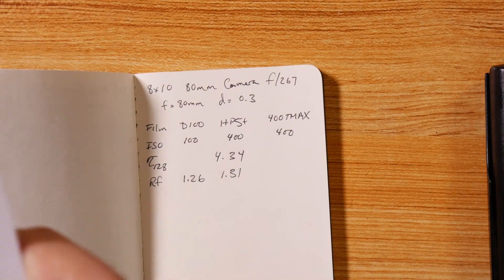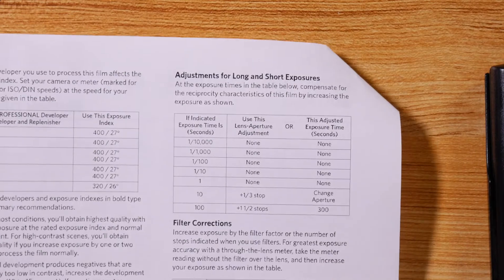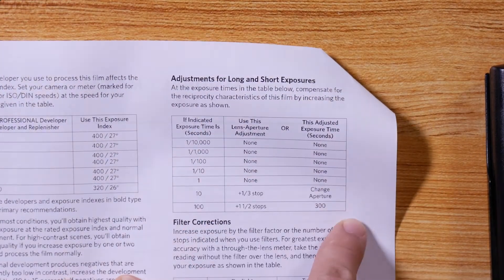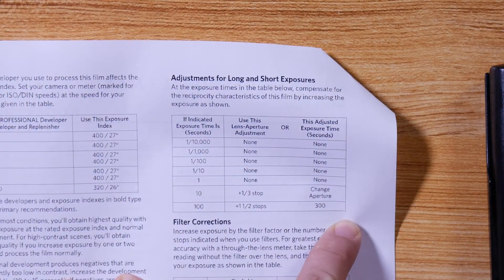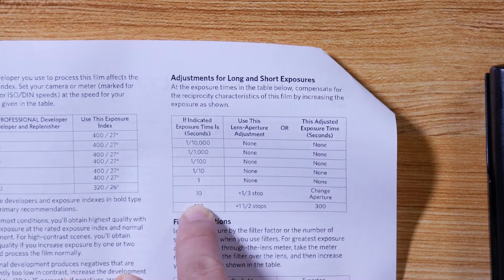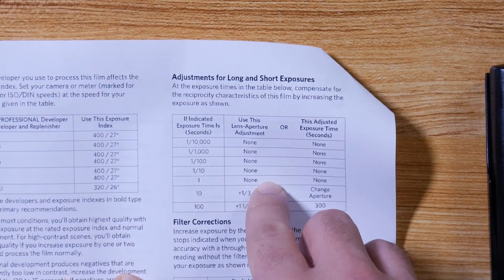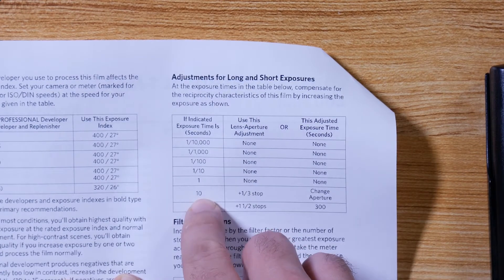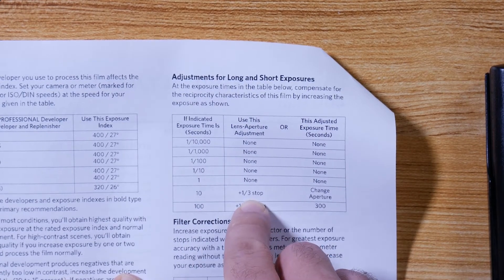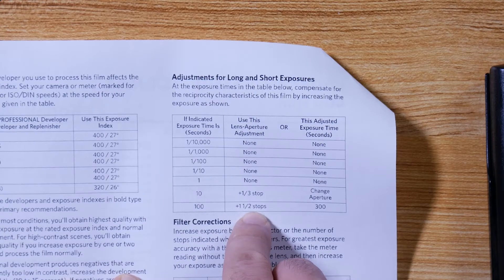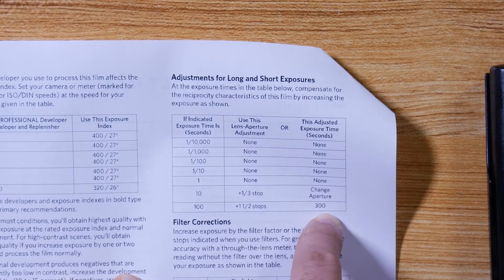On page two, lots of information in here. This is what they gave - they don't give reciprocity factors for their charts. Here we have: one second and below, no reciprocity correction needed. At ten seconds they say add a third of a stop. At a hundred seconds they say add one and a half stops. Your final shutter speed ends up being 300 seconds.